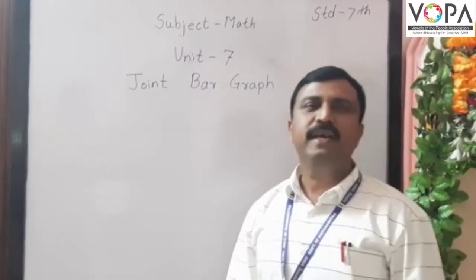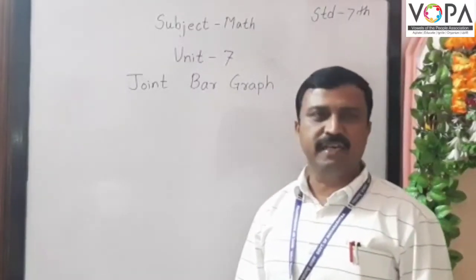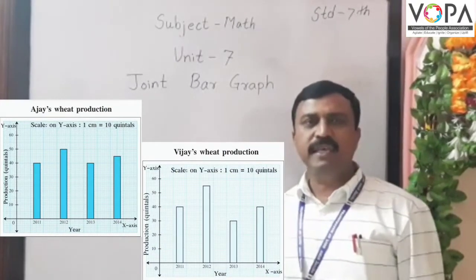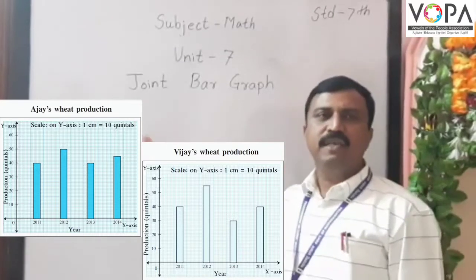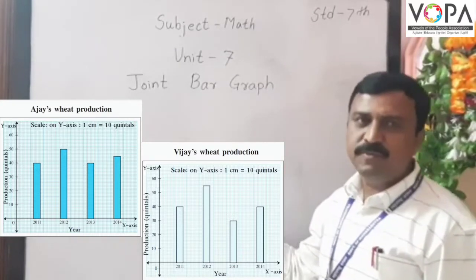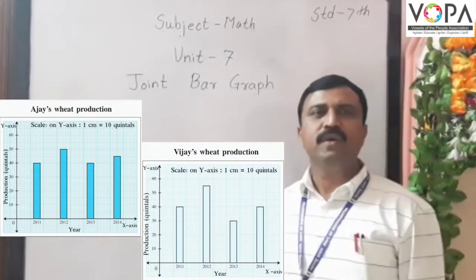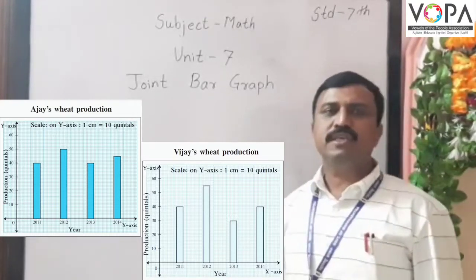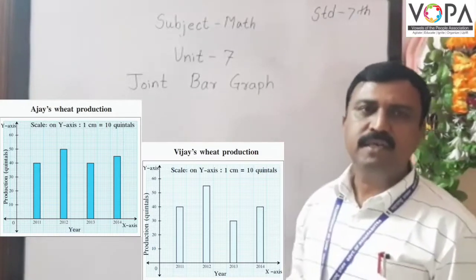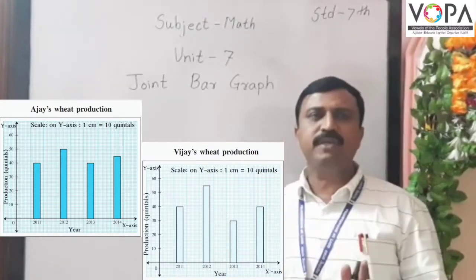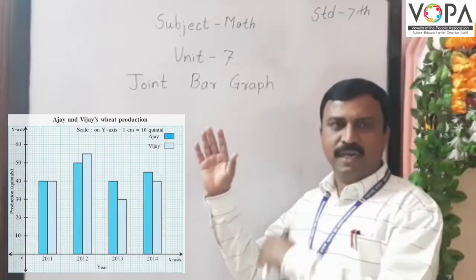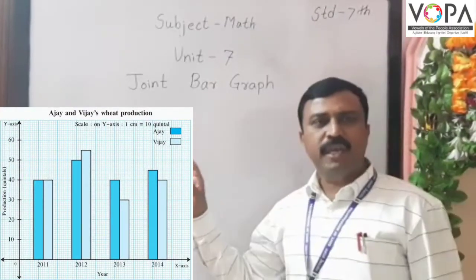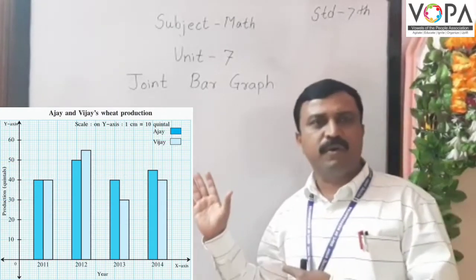Dear friends, we learned bar graphs in 6th standard. In a single bar graph, we can show one thing at a time. For example, jute production and wheat production can be shown by different bar graphs. We have extra space to show such types of graphs, but we can show the information from both graphs in a single graph. Look at the graph here — in this graph we can show jute production and wheat production comparing to each other.